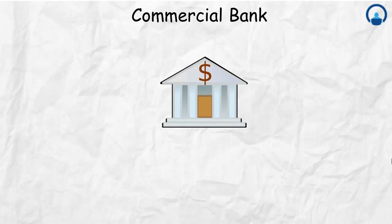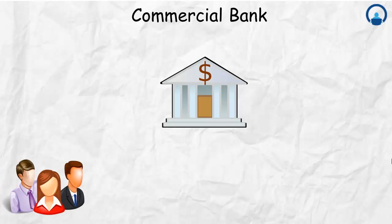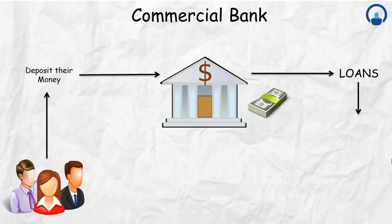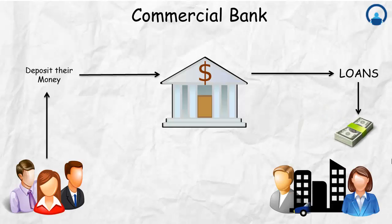Starting with the commercial bank — how does a commercial bank work, or what is its business model? The bank will take deposits from consumers. The people on the left-hand side are the consumers; they deposit their money into the bank. The bank then utilizes this money by giving it out as loans to other entities who need it — individuals, businesses, or people who need automobile loans.